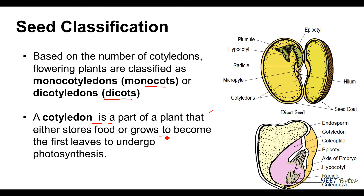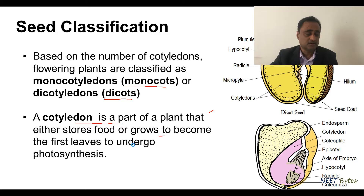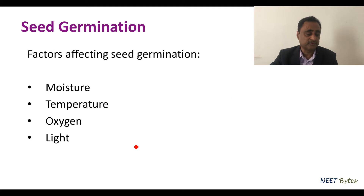Now let us talk about seed germination. There are certain factors required for seed germination. They are: moisture, temperature, oxygen, and light.